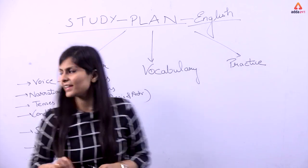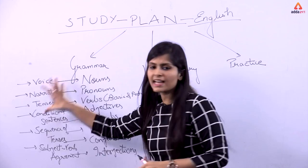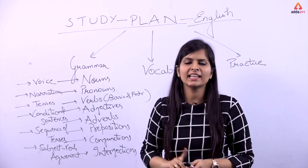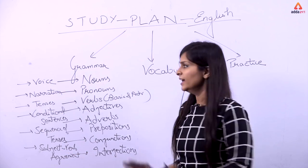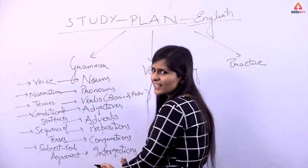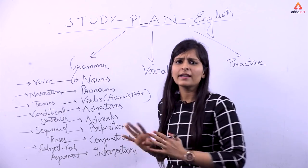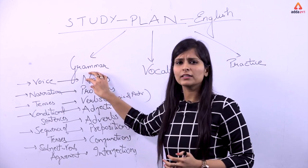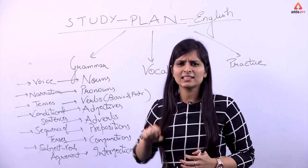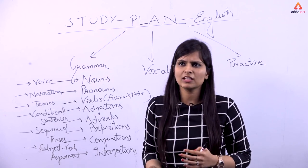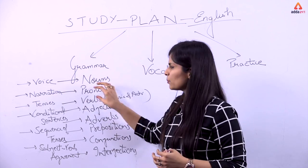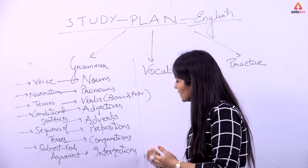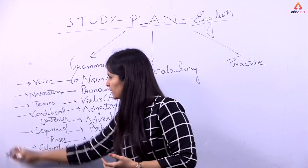We also have subject-verb agreement. So basically, we have all the concepts that we prepare for our exams — about eight to ten concepts. For example, if I talk about nouns alone, there are eight to ten concepts to learn within it. So in total, this is what we have to cover in grammar.